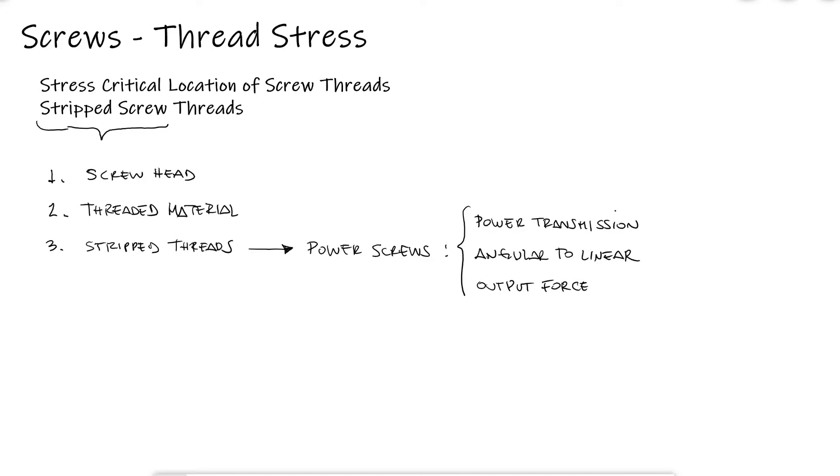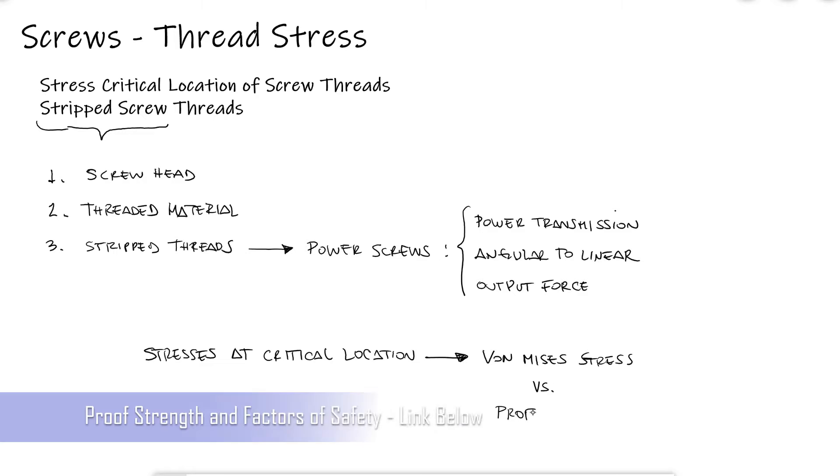In today's video, we will look at one approach to estimate the stresses at the threads of any kind of screw. We will find the reasonable stress types that are present at the critical stress elements within the screw, and we will calculate the von Mises stress for that critical location. The expression that we obtain will be a reasonable estimate to compare to what we will learn about the proof strength in a later video.